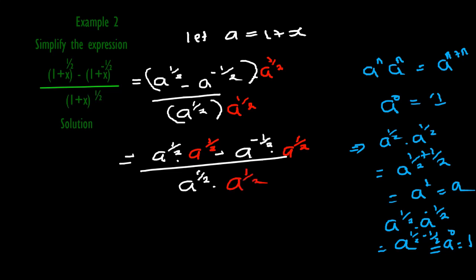After opening those brackets and applying the laws of indices: a raised to power half times a raised to power half in the numerator gives a raised to power 1, which is just a. Then minus — the second term in the numerator — a raised to negative half times a raised to power half gives a raised to power zero, which is 1. So the numerator becomes a minus 1, and the denominator is a.